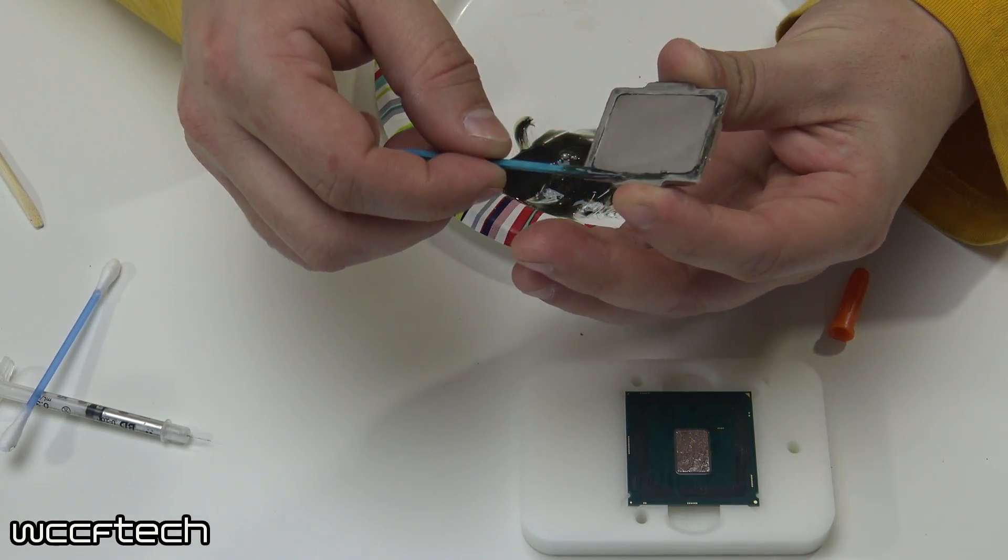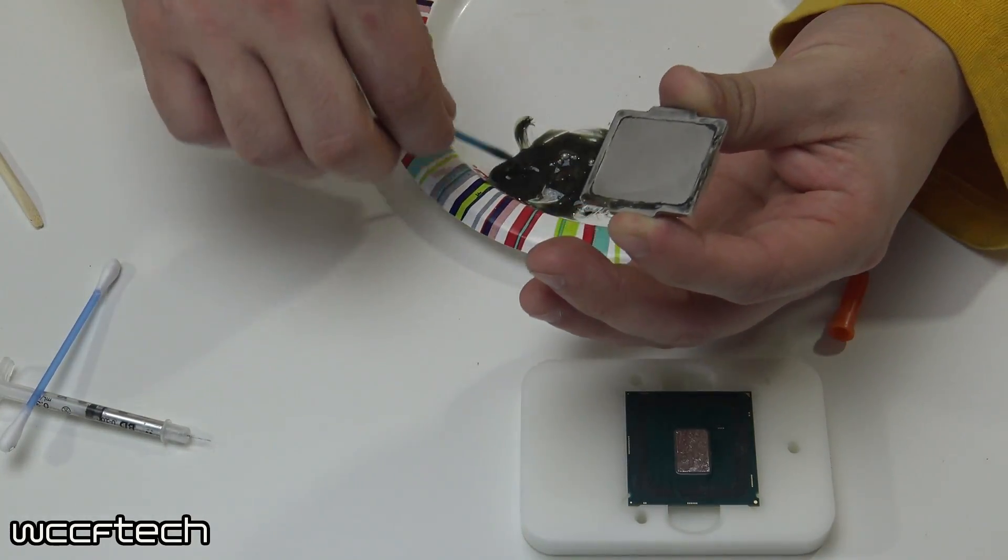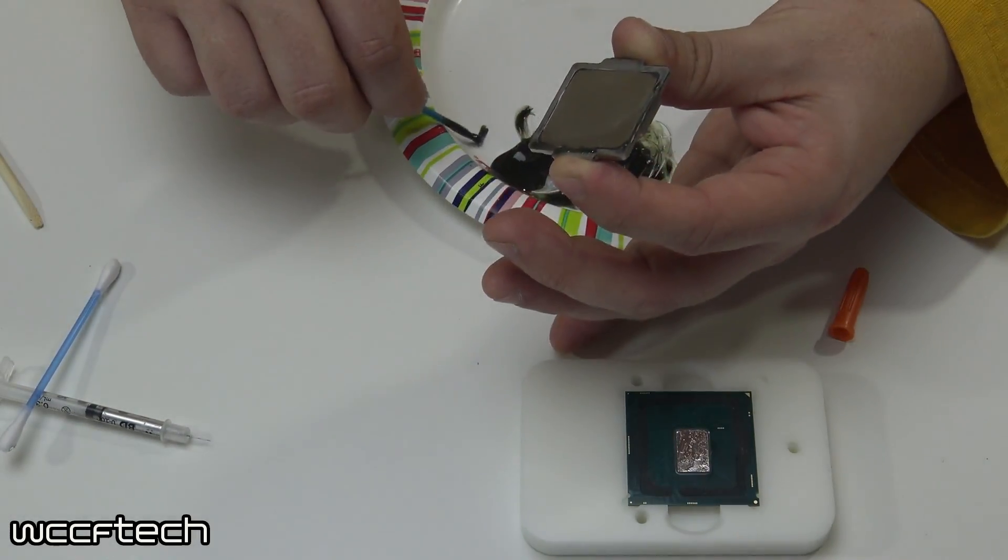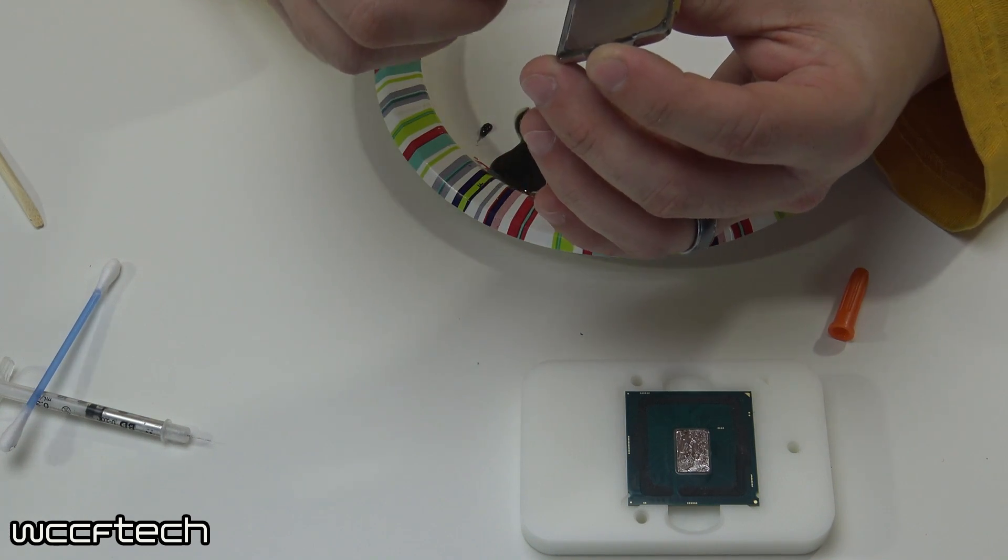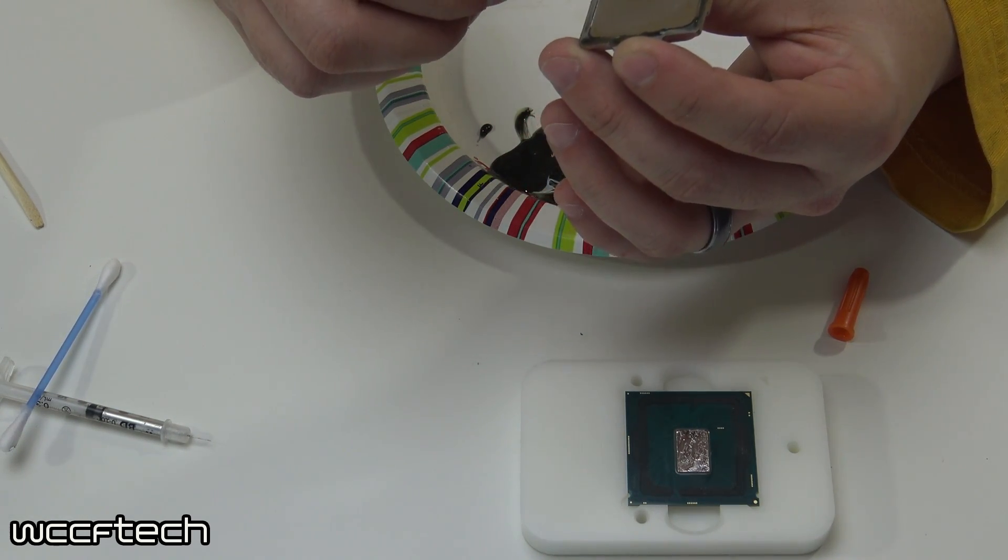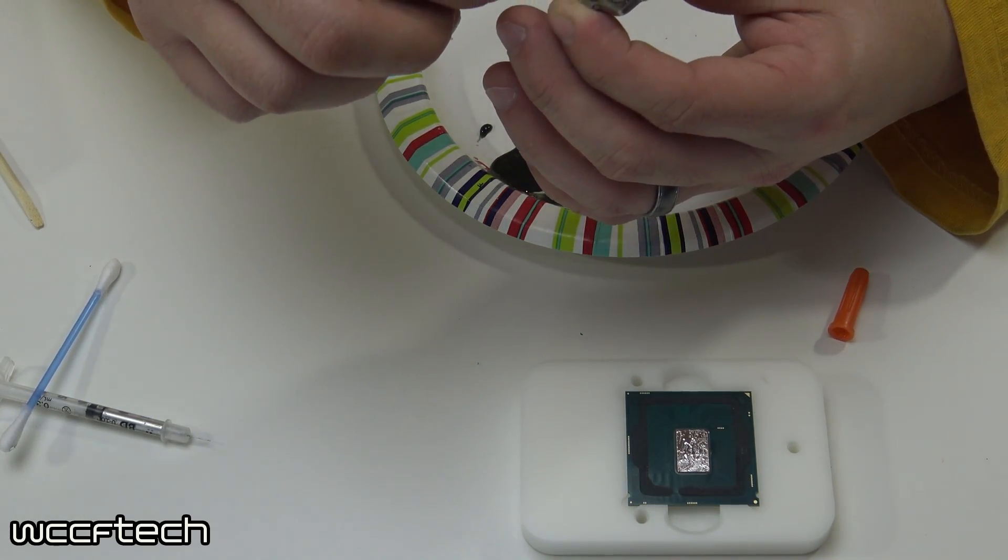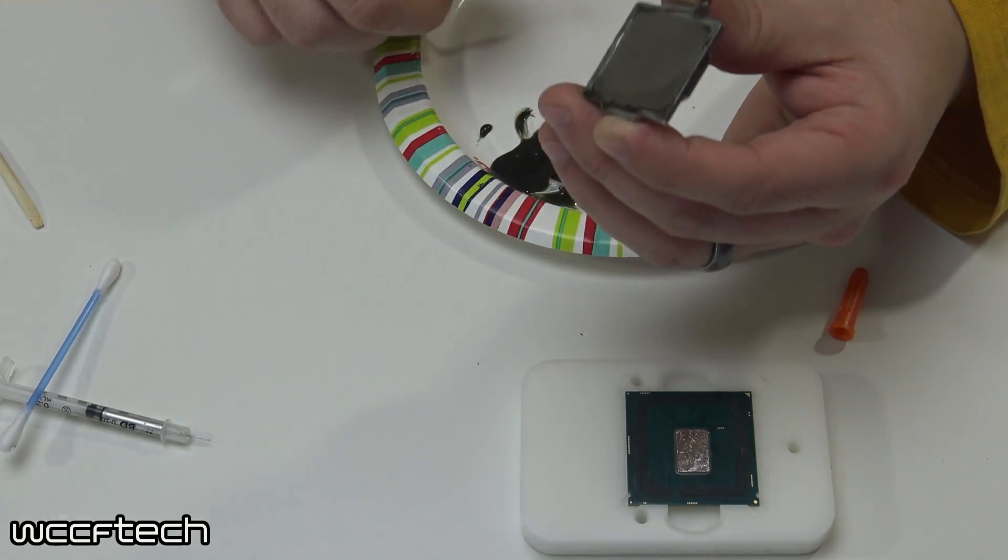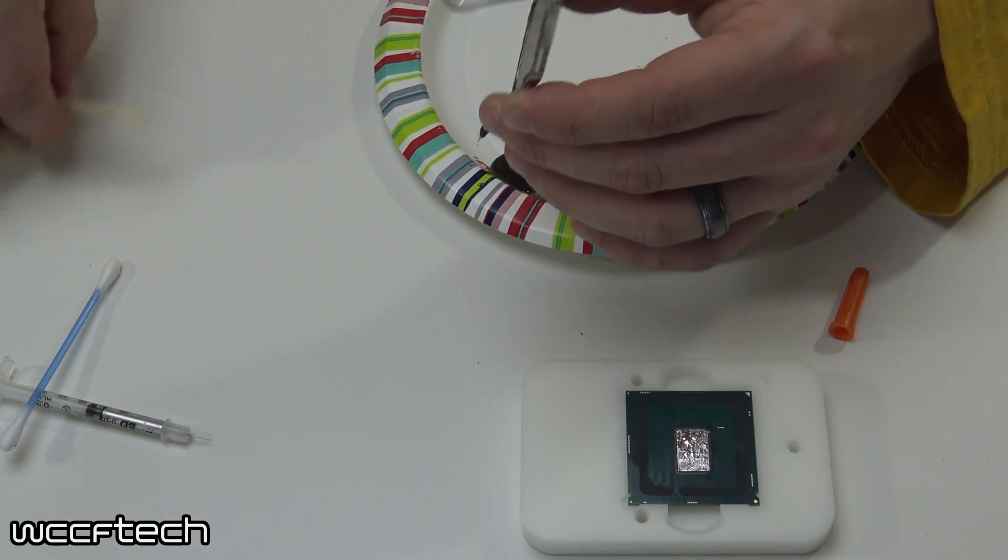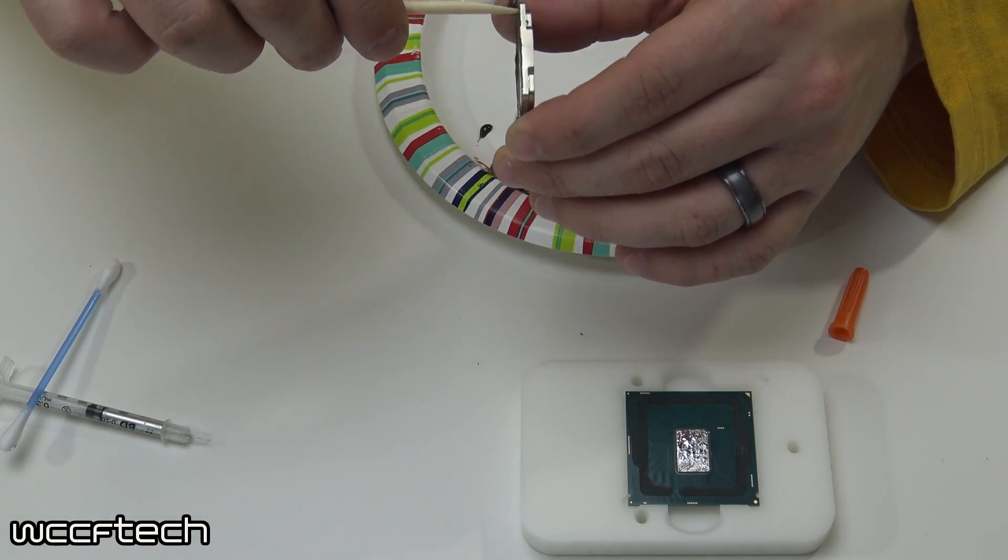You're going to make sure you don't run it across the middle here because that's where obviously the die is going to sit. Just running a small bead along the edges. Now this little bit here that ran over, I'm going to go ahead and scrape that off.